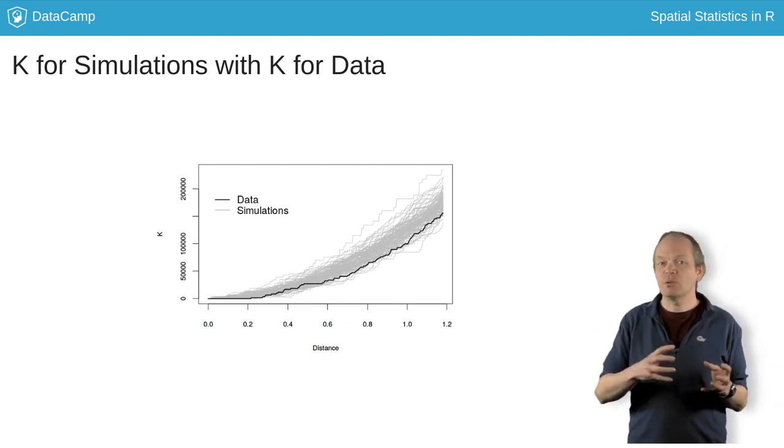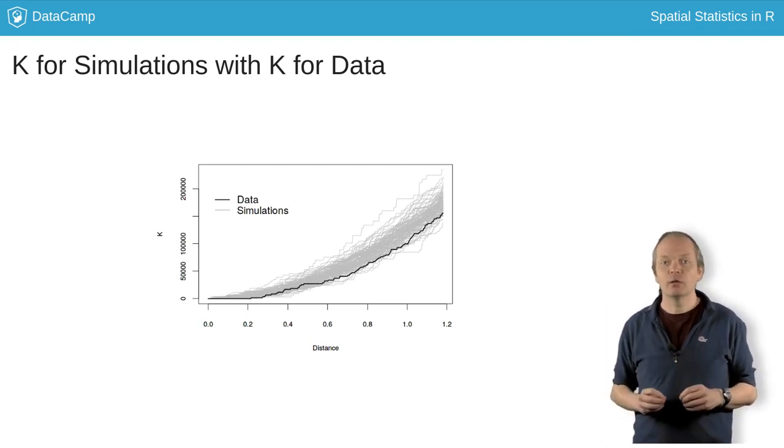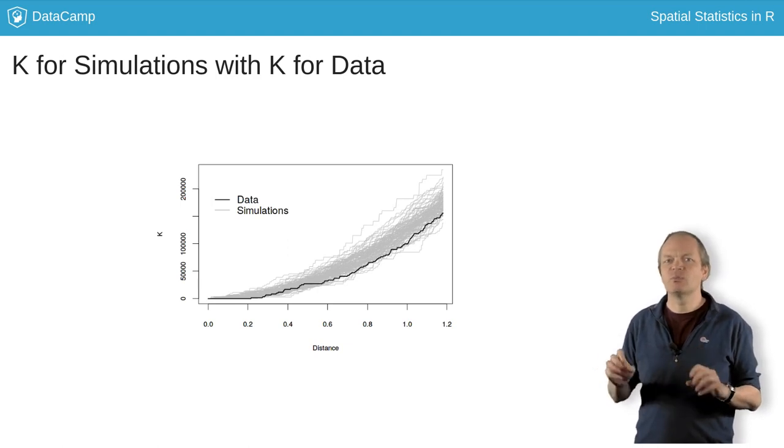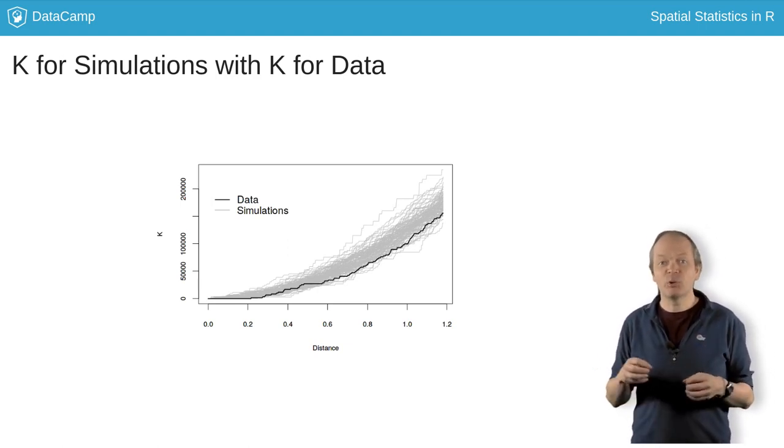Is it bigger than the simulations at any point? That's an indication of clustering at that scale. Since the data at that point outranks all 99 simulations, you can say it rejects the null hypothesis at a p-value of 0.01.